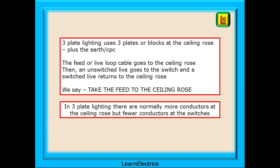Three-plate lighting uses three plates or blocks at the ceiling rose, plus the earth or CPC. The feed cable, or live loop cable, goes to the ceiling rose. Then an unswitched live goes down to the switch, and a switched live returns to the ceiling rose. We say: take the feed to the ceiling rose. In three-plate lighting, there are normally more conductors at the ceiling rose, but fewer conductors at the switches.